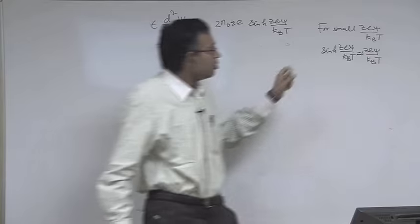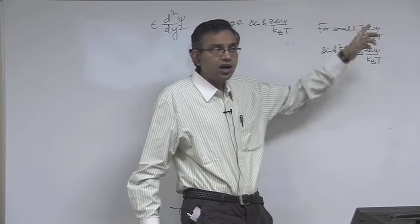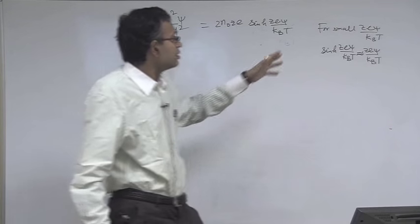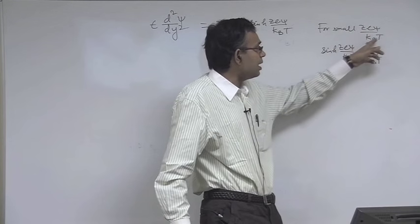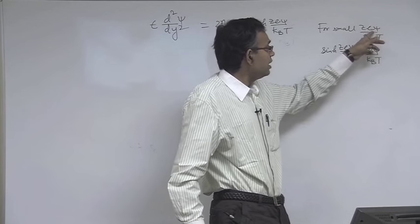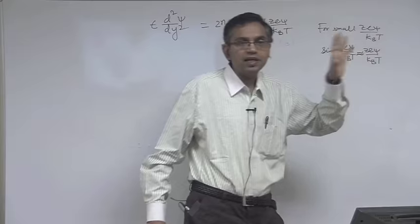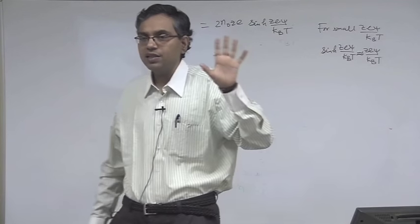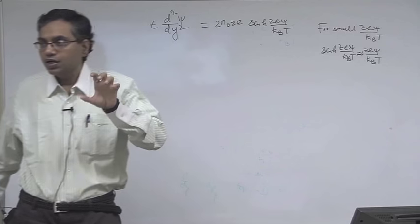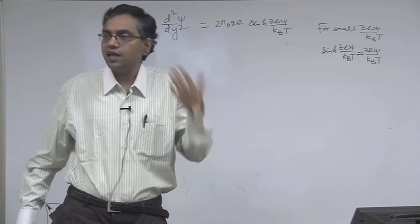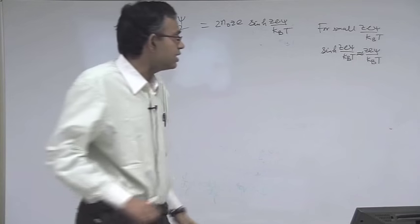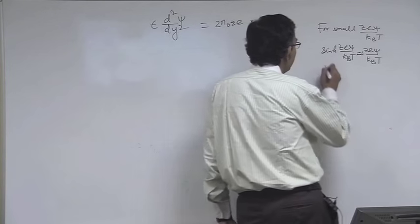If your zeta potential in magnitude is less than 25 mV, you can apply this linearization, which is known as the Debye-Hückel linearization.